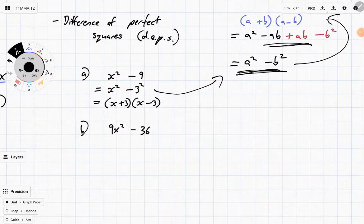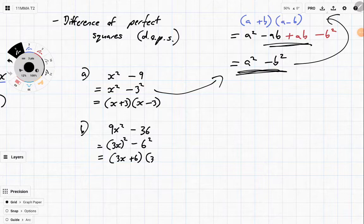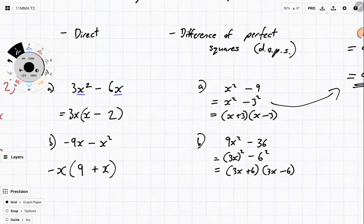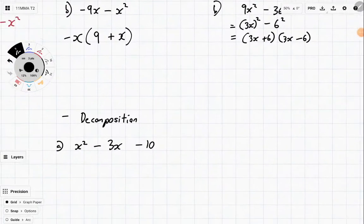Let's have a look at a more complex one. We've got 9x squared minus 36. Well, 9x squared is really 3x squared, and 36 is really 6 squared. So that's our a, that's our b. Substitute into our formula, and we're going to get 3x plus 6, 3x minus 6, and we're done. So difference of perfect squares and direct are both meant to be the quicker factorizing methods. And if neither of those two are going to work, we move on to decomposition.